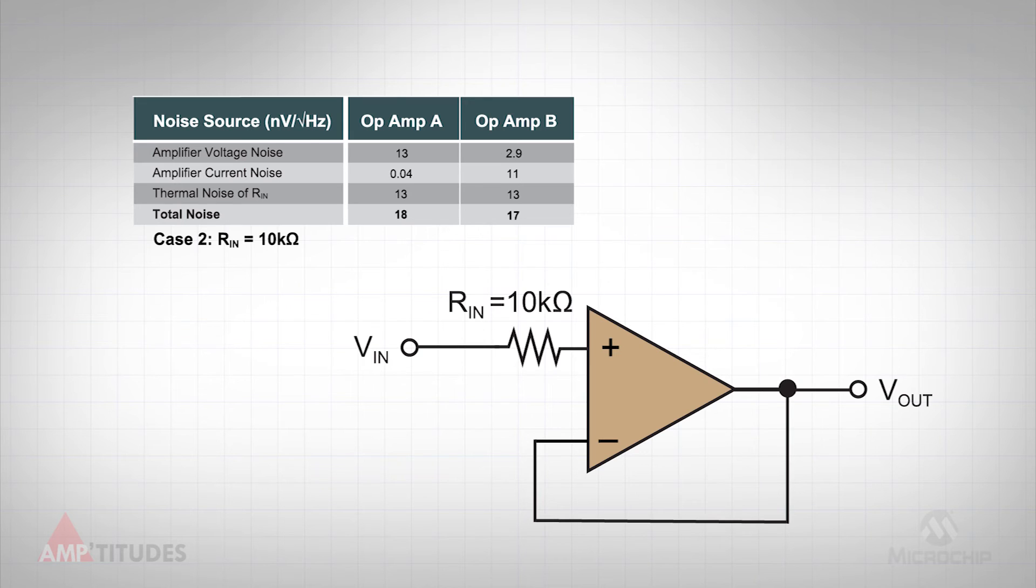Now let's increase the input resistance to 10 kilo-ohms. Now the contribution of the thermal noise of the input resistor begins to factor in, and the current noise of the amplifier must also be factored in. For this case, the two amplifiers are very similar in overall noise performance.